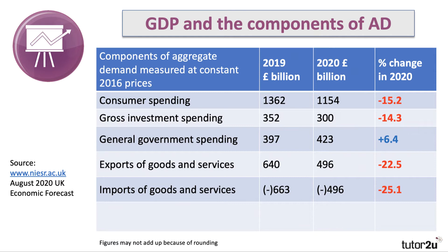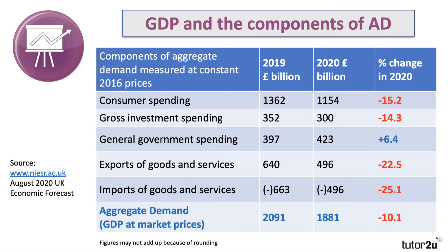When thinking about GDP, we think about aggregate demand: C + I + G + X − M. Here's the data for aggregate demand in the UK. You can see the extent of the fall in consumer spending and investment spending, a big drop-off in trade, while government spending is up — there has been quite a significant fiscal stimulus in response to the crisis. According to this data from the Niesr, August 2020, GDP was down 10% in real terms on the year.